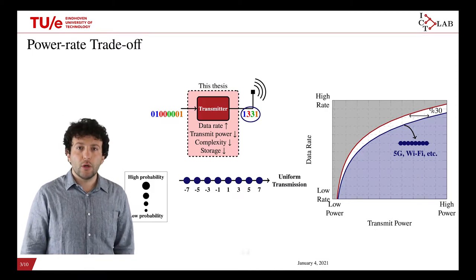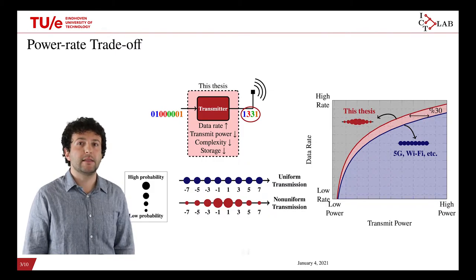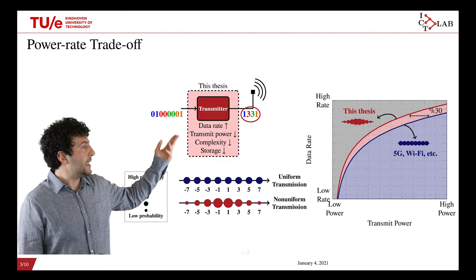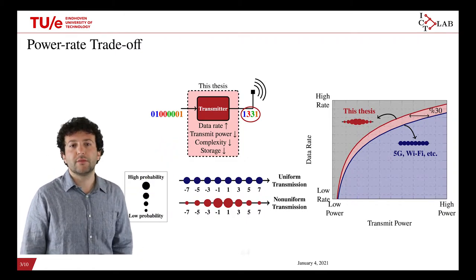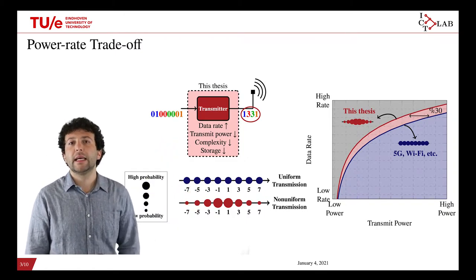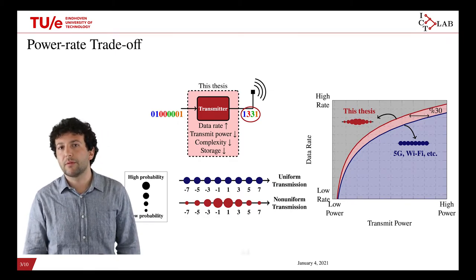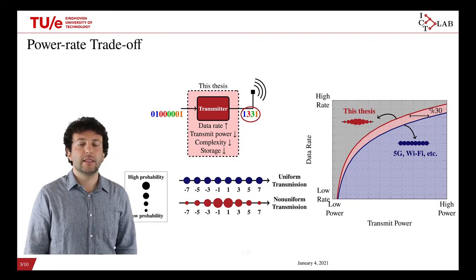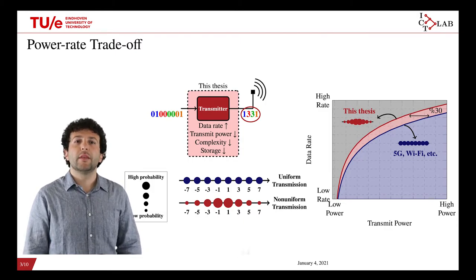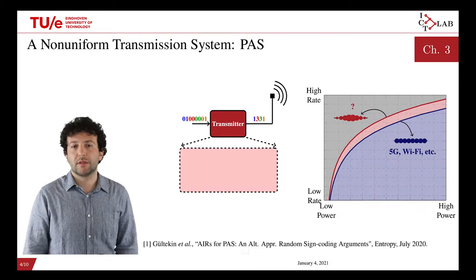To close this gap and operate at capacity — the maximum achievable performance — you need to transmit symbols at the output of your transmitter with non-uniform probabilities, such that low-energy symbols are transmitted with higher probability than high-energy ones. In this thesis we focused on the design of non-uniform transmission strategies and the design of such transmitters.